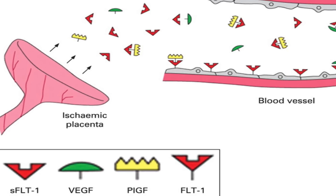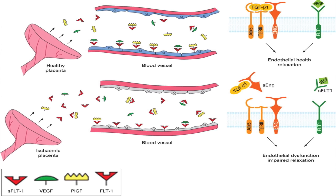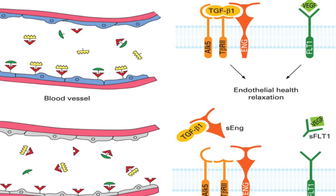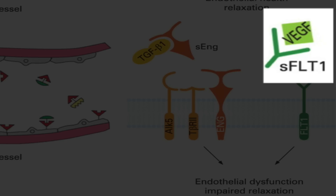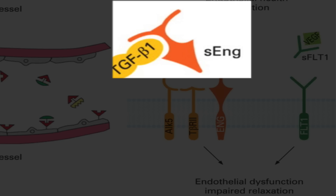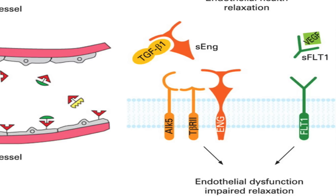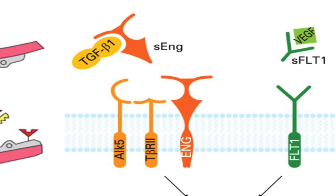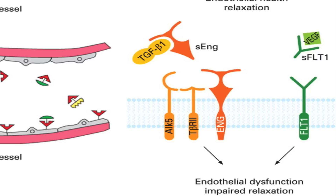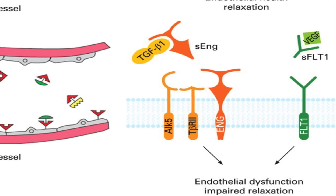In pre-eclampsia, however, the placenta releases two factors which are receptors for the angiogenic factors. They get sliced off and enter the maternal circulation. These are soluble FMS-like tyrosine kinase 1 and soluble endoglin. They are called anti-angiogenic factors. They bind and block the angiogenic growth factors. In a nutshell, this is what causes pre-eclampsia.